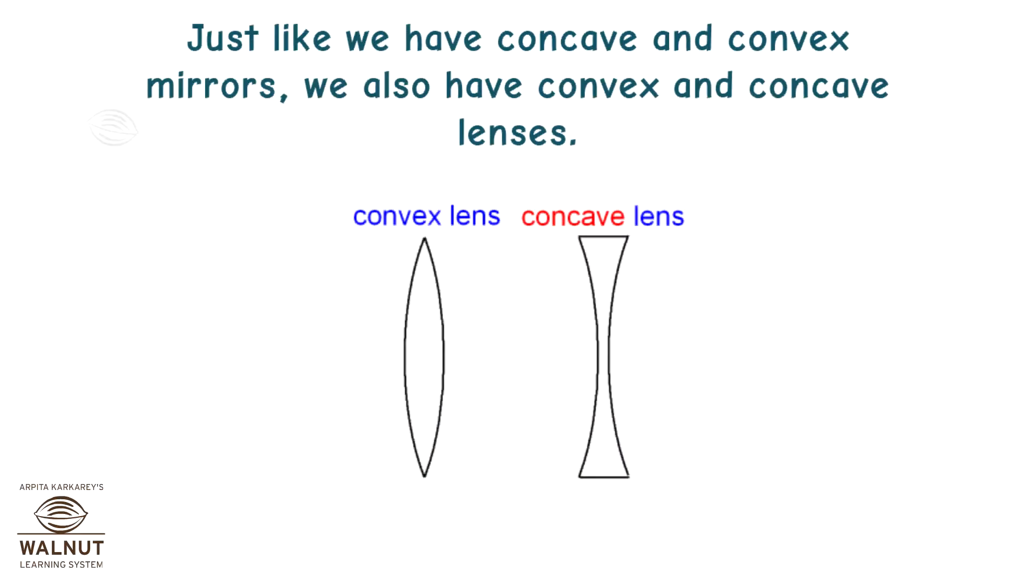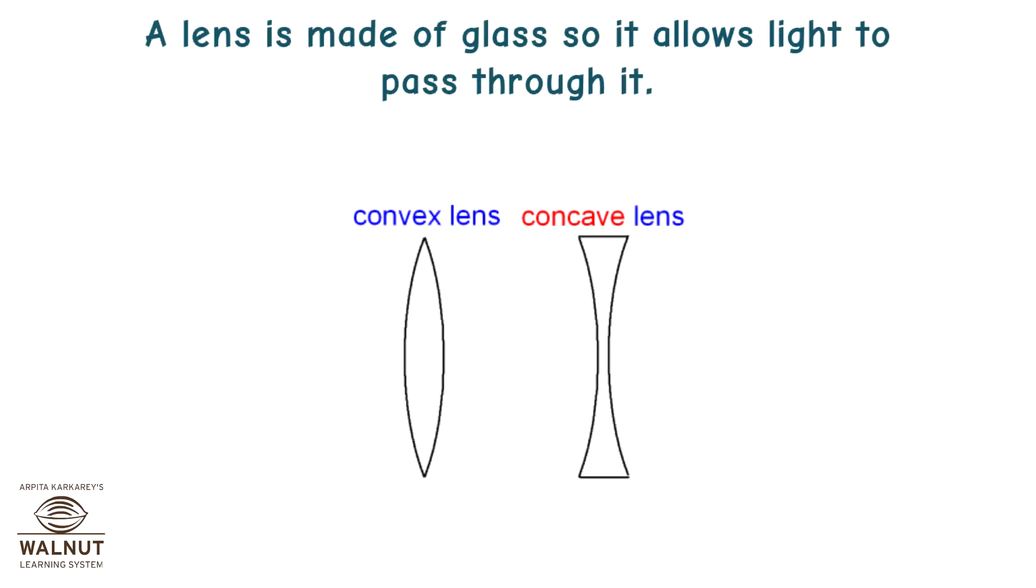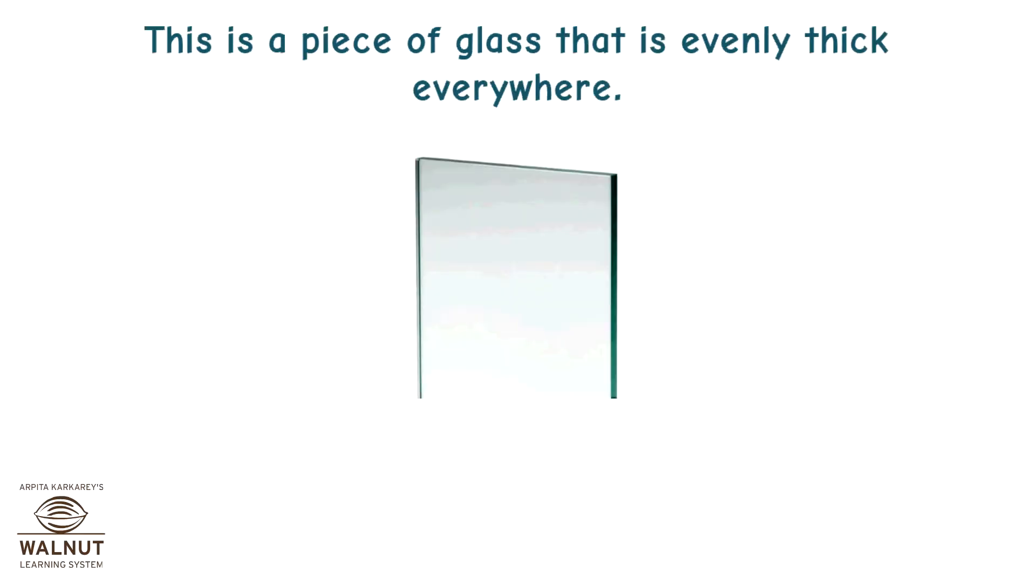Just like we have concave and convex mirrors, we also have convex and concave lenses. A lens is made of glass, so it allows light to pass through it. This is a piece of glass that is evenly thick everywhere.